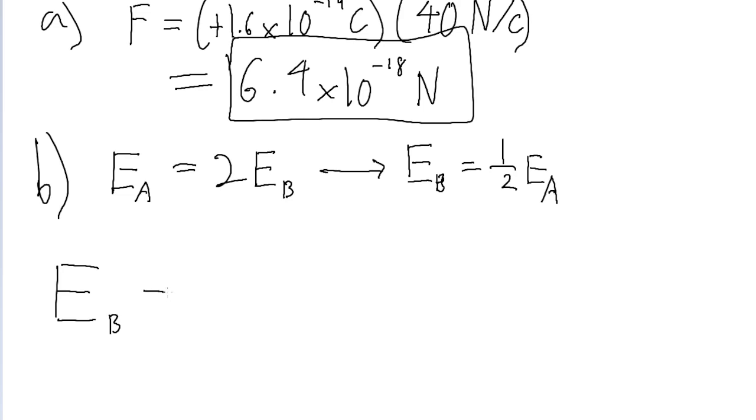Since the electric field at A is 40 newtons per coulomb, the field strength at point B must be half of that, or 20 newtons per coulomb.